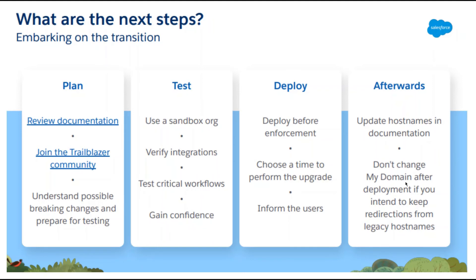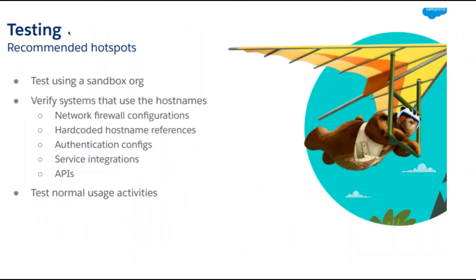Don't change My Domain after deployment if you intend to keep redirection from legacy hostnames. For the plan-test-deploy approach: first review documentation, join the Trailblazer community, understand possible breaking changes, and prepare for testing. Use sandboxes to verify integrations and test critical workflows to gain confidence. Then deploy to production before enforcement, choose a time to perform the upgrade, and inform users.